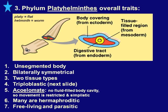Let's look at the platyhelminthes' overall traits. 1. Unsegmented body — no repeating segments. 2. Bilateral symmetry. 3. They have three tissue types. 4. They're triploblastic. 5. They're acoelomate — no fluid-filled body cavity, so movement is restricted and simplistic. 6. Many are hermaphroditic — they have both male and female reproductive organs. 7. They can be free-living or parasitic. The diagram shows a body covering from the ectoderm, a tissue-filled region from the mesoderm, and a digestive tract from the endoderm, with no segmentation.